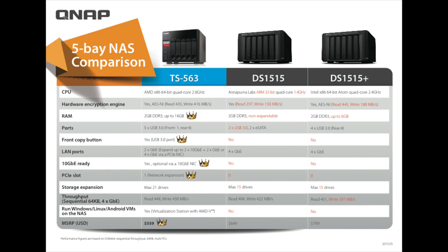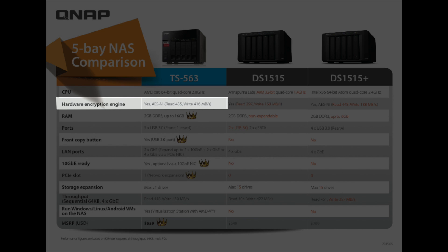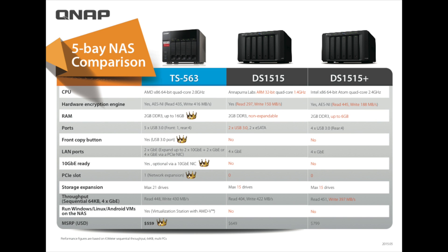Next, let's take a look at hardware encryption. All three units do have hardware encryption. The QNAP TS-563 has AES-NI hardware encryption and reads at 435 and writes at 416 megabytes per second. The DS-1515 also has hardware encryption — it reads at 297 and writes at 150 megabytes per second. The DS-1515+ also has hardware encryption, reading at 445 and writing at 188 megabytes per second. There you can see the similarities and differences of the hardware encryption engine.